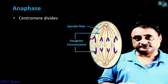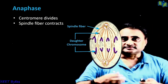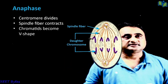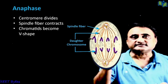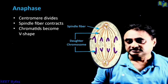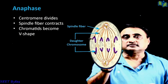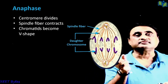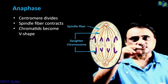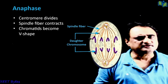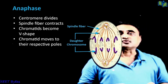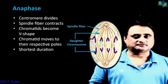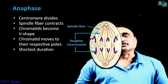In anaphase, the centromere splits, and once the centromere divides, the chromatids move to their two respective poles because the spindle fibers contract. As a result of contraction, the chromatids move and assume a V-shape. This shape depends on the type of chromosome: metacentric chromosomes give a V-shape, and telocentric chromosomes give an L-shape. The shape depends on the position of the centromere. Anaphase is of the shortest duration.